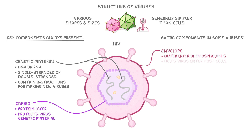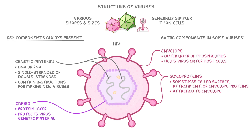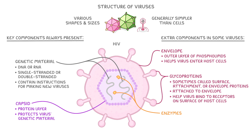Some viruses can also have glycoproteins, which are sometimes called surface attachment or envelope proteins. These are attached to the envelope and help the virus bind to receptors on the surface of host cells. Lastly, certain viruses carry enzymes — in our example here, that would be reverse transcriptase.